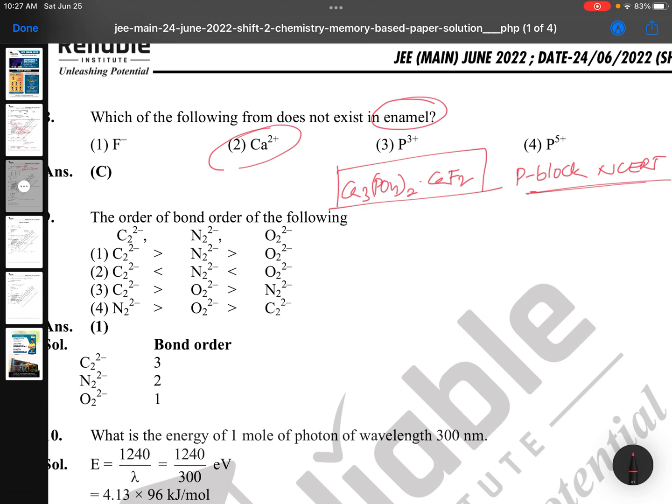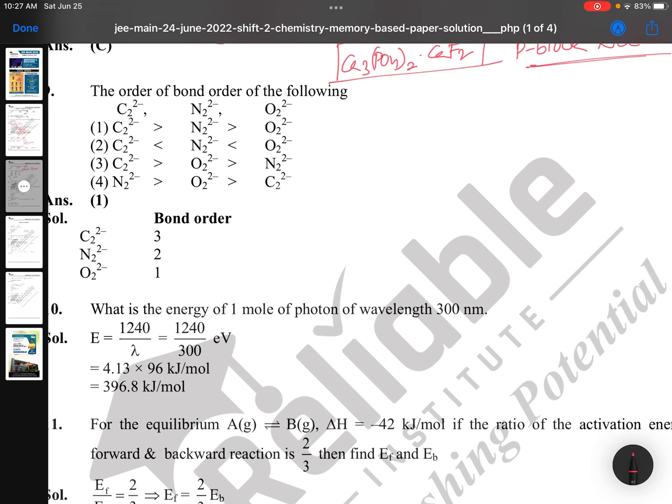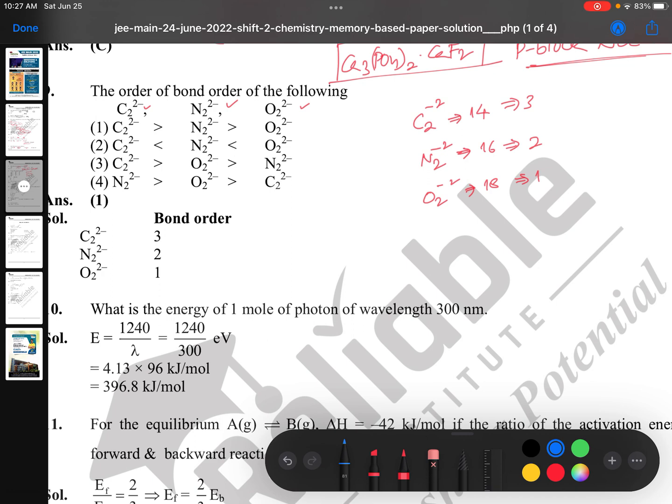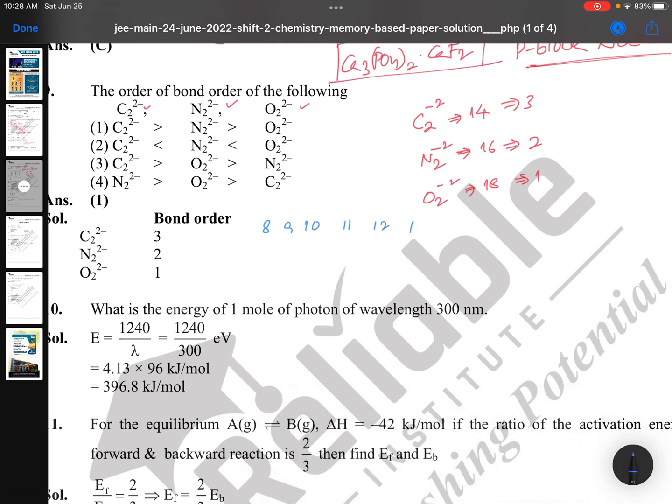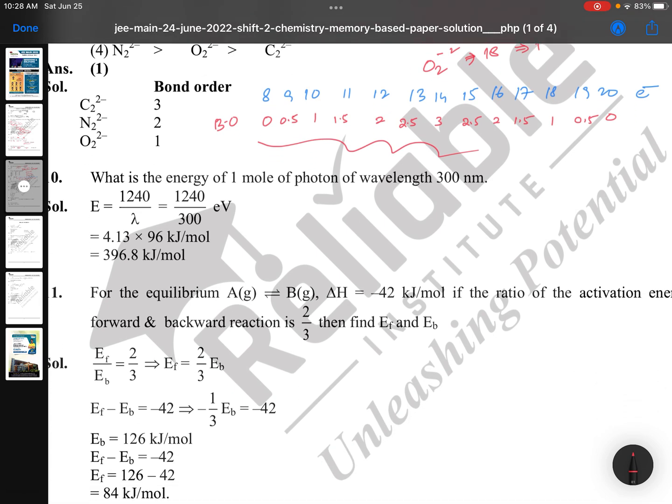Order of bond order: C2^2-, N2^2-, O2^2-. C2^2- has 14 electrons, N2^2- has 16 electrons, O2^2- has 18 electrons. The bond order is 3, 2, and 1 respectively. I gave you a shortcut, you can see my old videos. The number of electrons: 8, 9, 10, 11, 12, 13, 14, 15, 16, 17, 18, 19, 20. The bond order is very simple: start from 0, increase by 0.5, go up to 3, then decrease by 0.5, come down to 0. With this you can easily determine the bond order.